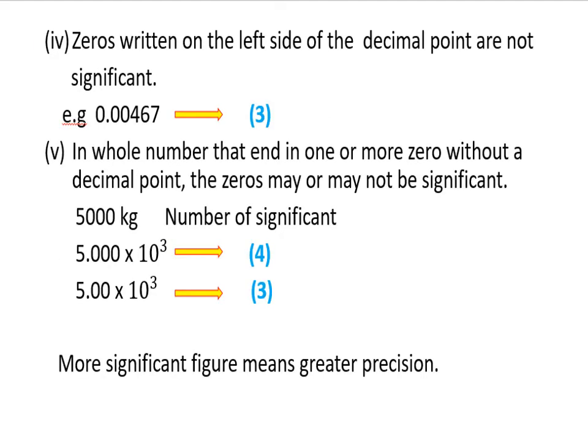The fourth rule: zeros written on the left side of the decimal point are not significant. When we have a decimal and there is a zero on the left side, it will not be significant. For example, 0.00467 — the zeros on the left are not significant. The significant figures are 4, 6, and 7, which gives us 3 significant figures.